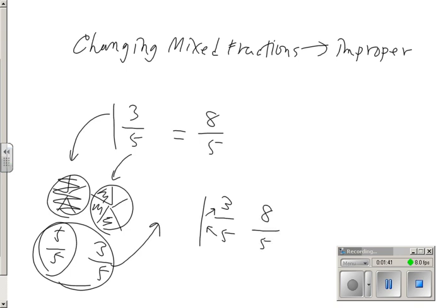and that gives me 8 fifths. So it's multiply and add, and that will be my shortcut rule for changing a mixed fraction to improper. Let's try another one.